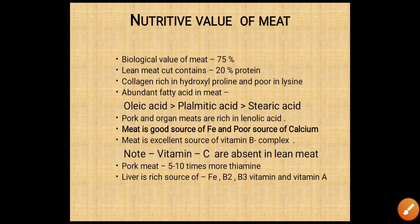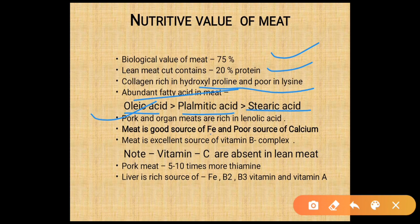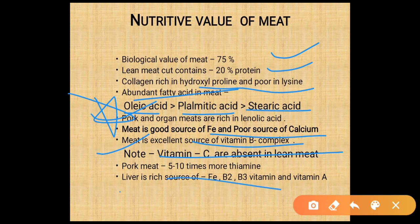Nutritive value of meat: the biological value is about 75%. Lean meat contains about 20% protein. Collagen is rich in hydroxyproline and poor in lysine. The most abundant fatty acid in meat is oleic acid, then palmitic acid, then stearic acid. Pork and organ meats are rich in linoleic acid. Meat is a good source of iron but poor source of calcium. Meat is an excellent source of B-complex vitamins; vitamin C is absent in lean meat. Pork meat contains 5 to 10 times more thiamine. Liver is rich in iron and vitamins B2, B3, and vitamin A.